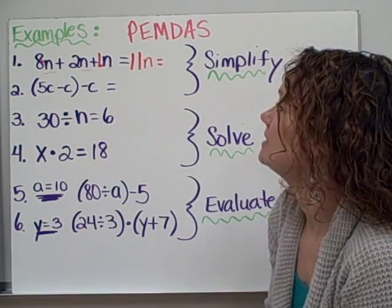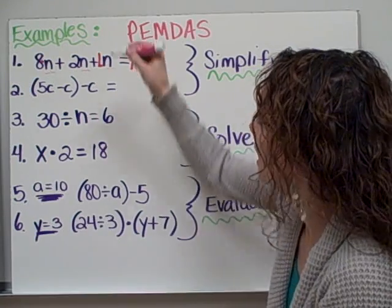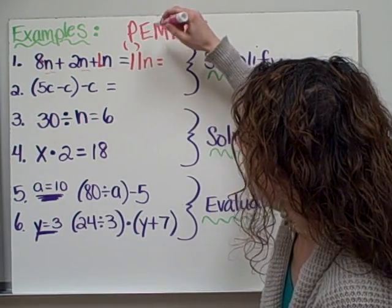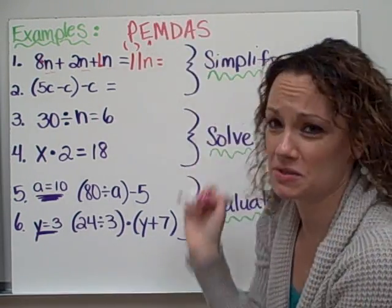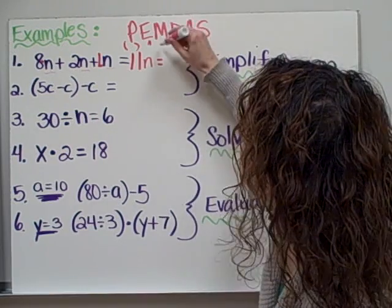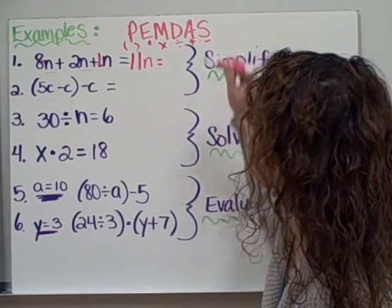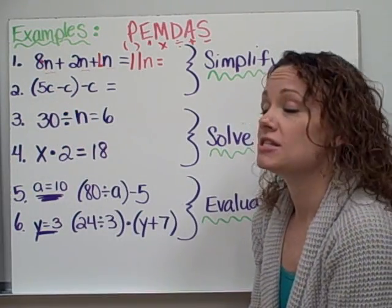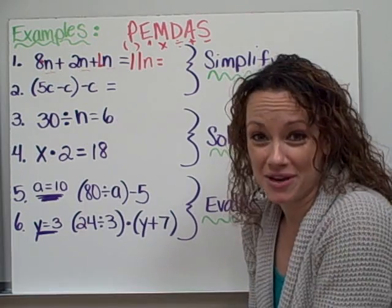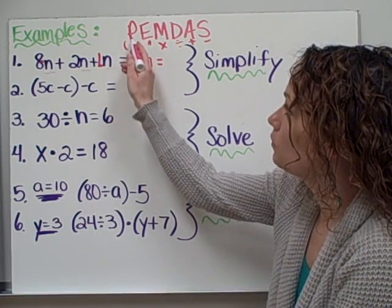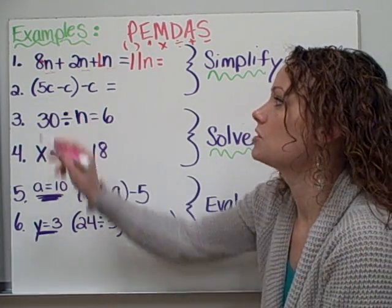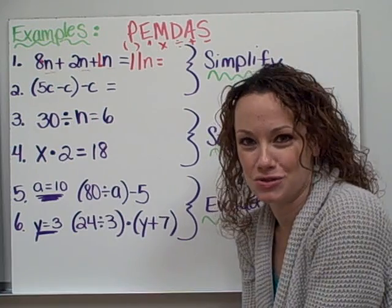So as we know, Please Excuse My Dear Aunt Sally, our order of operations. We have parentheses first, exponents, which we hardly ever use in fourth grade, multiplication, division, addition, and subtraction. Now in this problem, the two operations that I have are subtraction and parentheses. So if we look up here at our rules, we see that the p comes first. So whatever is in the parentheses, we must do first.